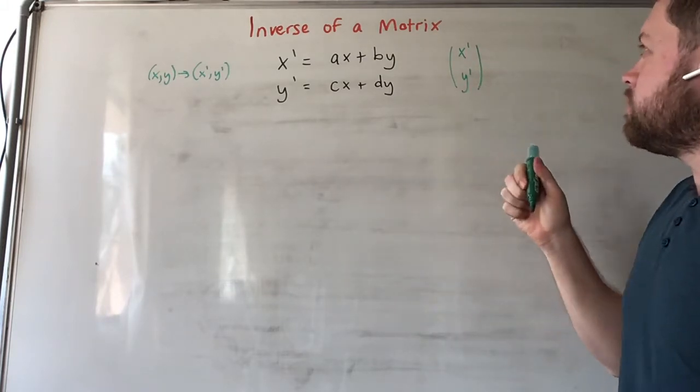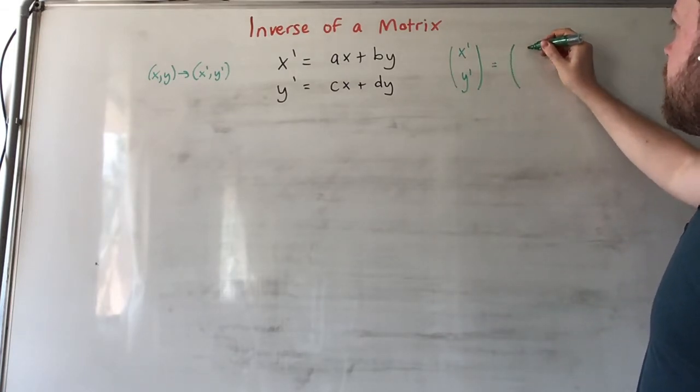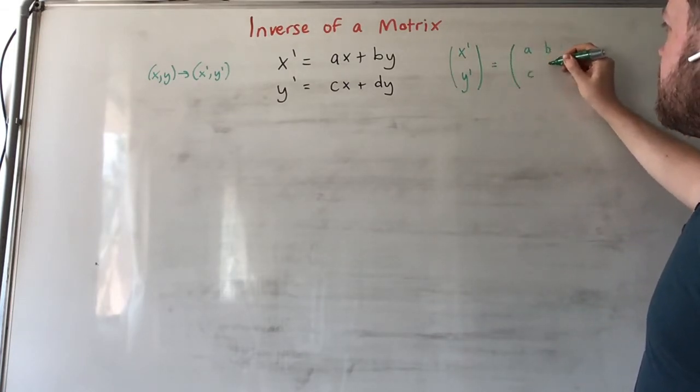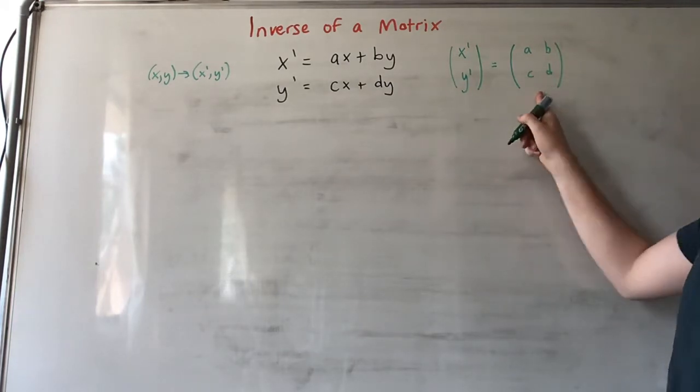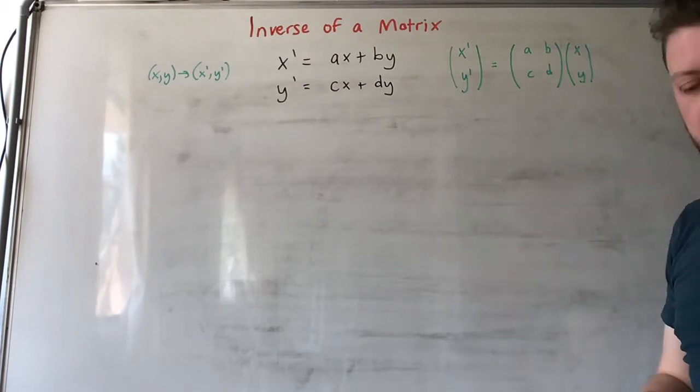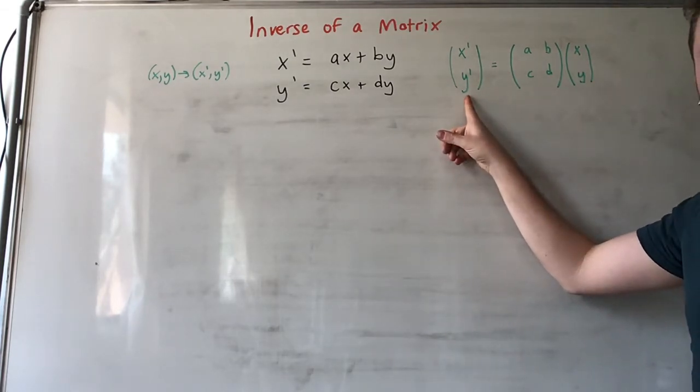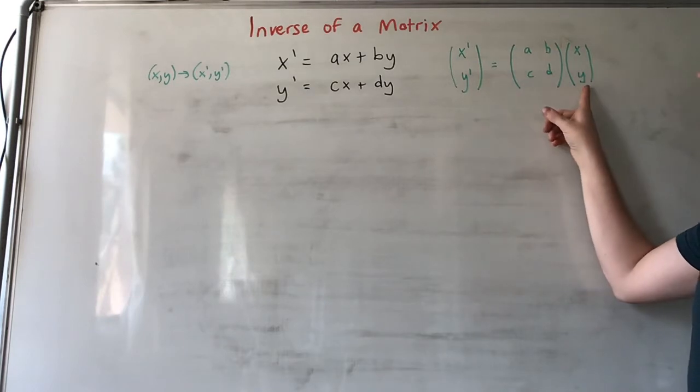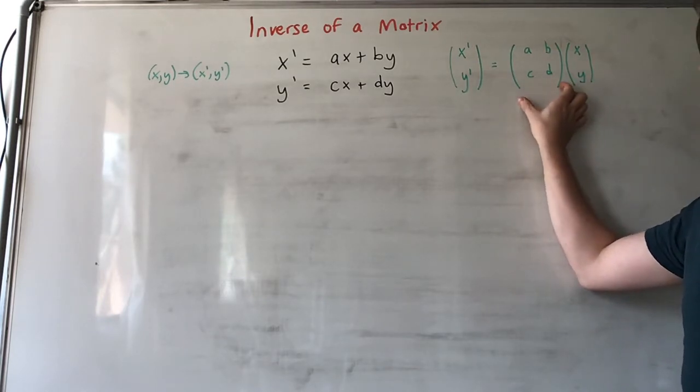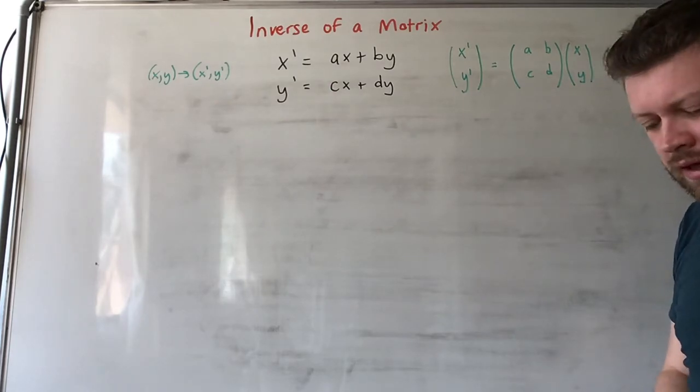It looked like this: we wrote the new coordinates x', y' as a vector, a 2 by 1 vector. That was equal to a b c d, our transformation matrix, times the original coordinates x, y in another 2 by 1 vector. So the new coordinates are the old coordinates transformed by this matrix.